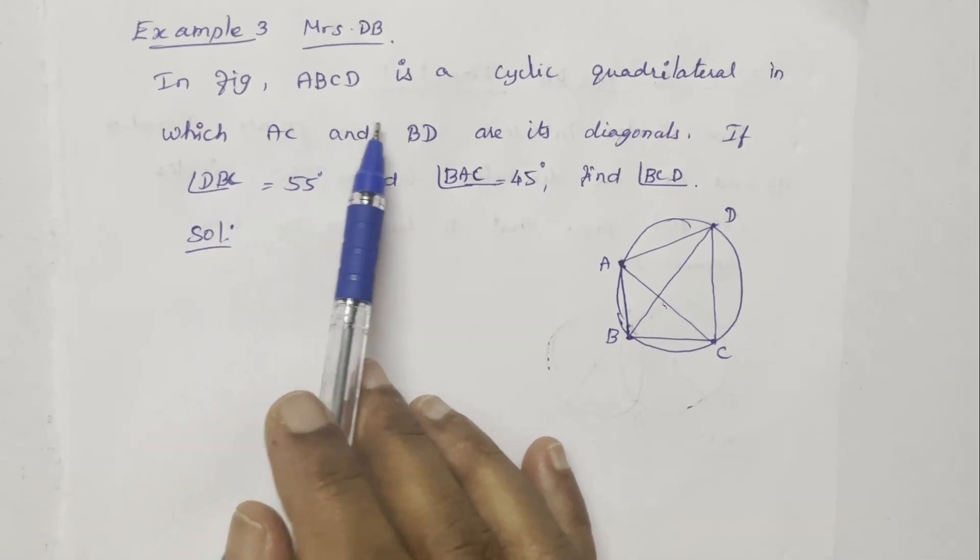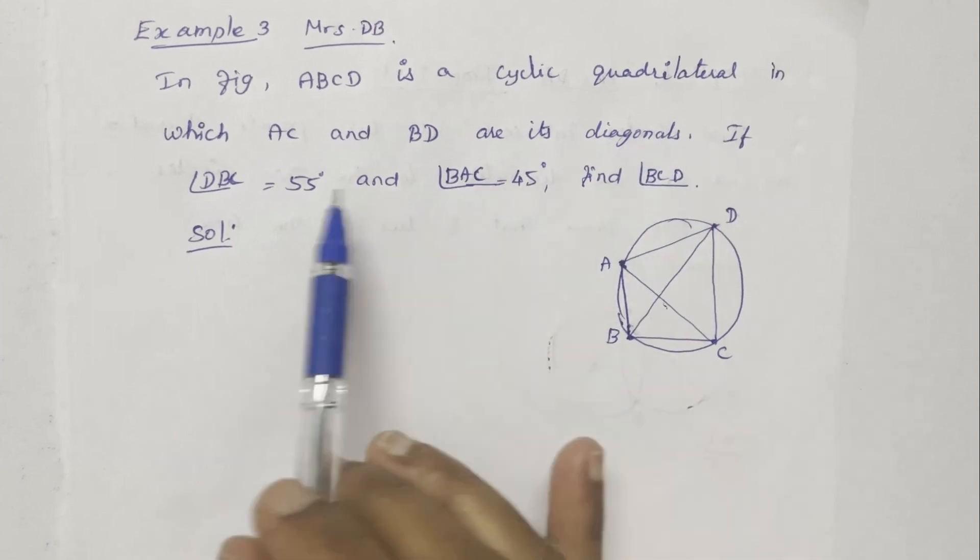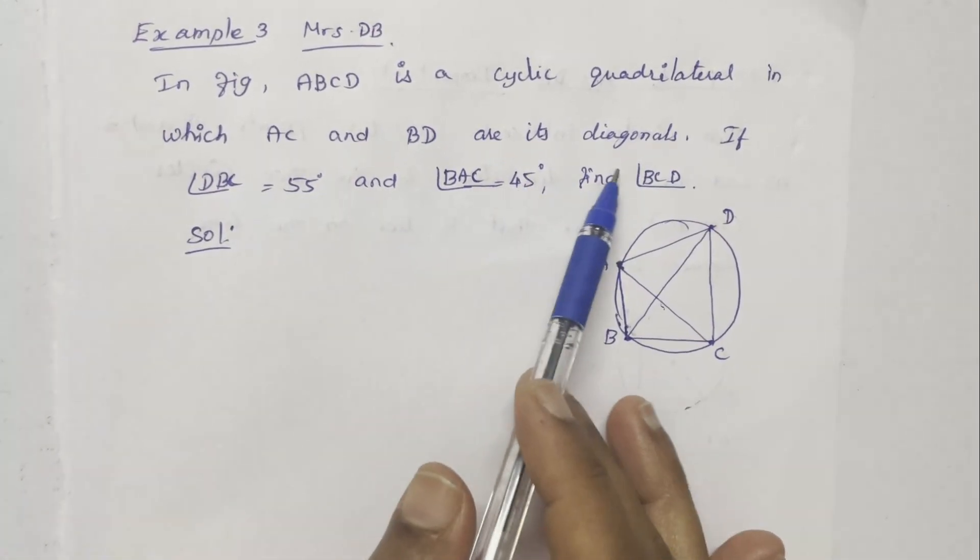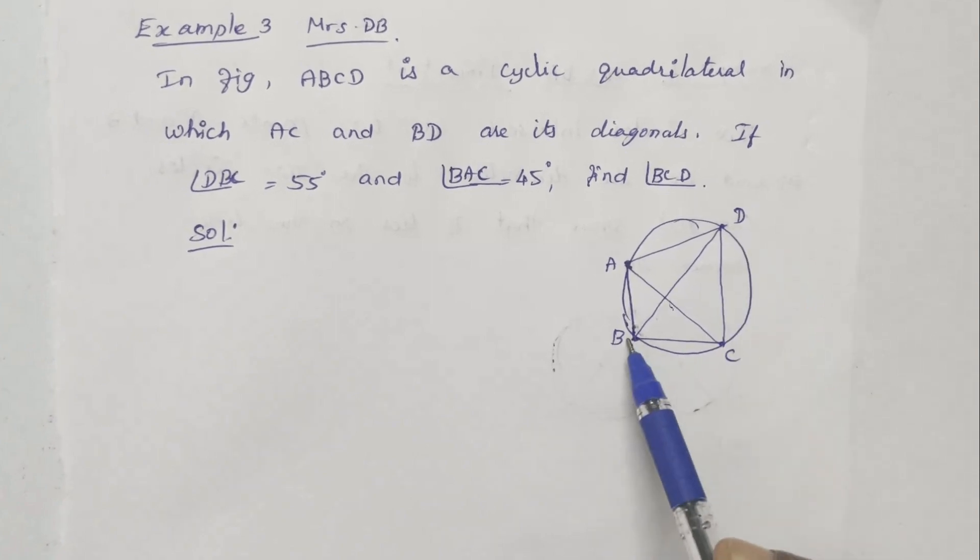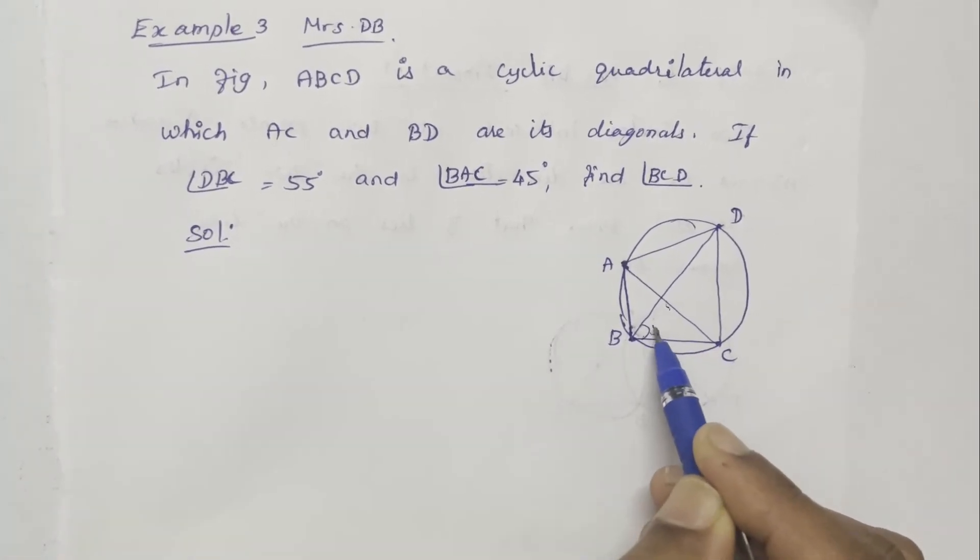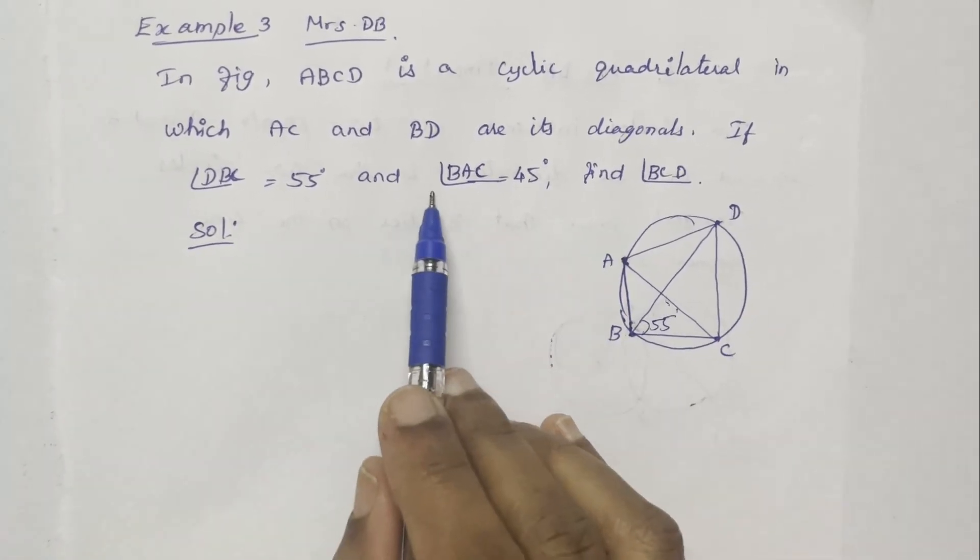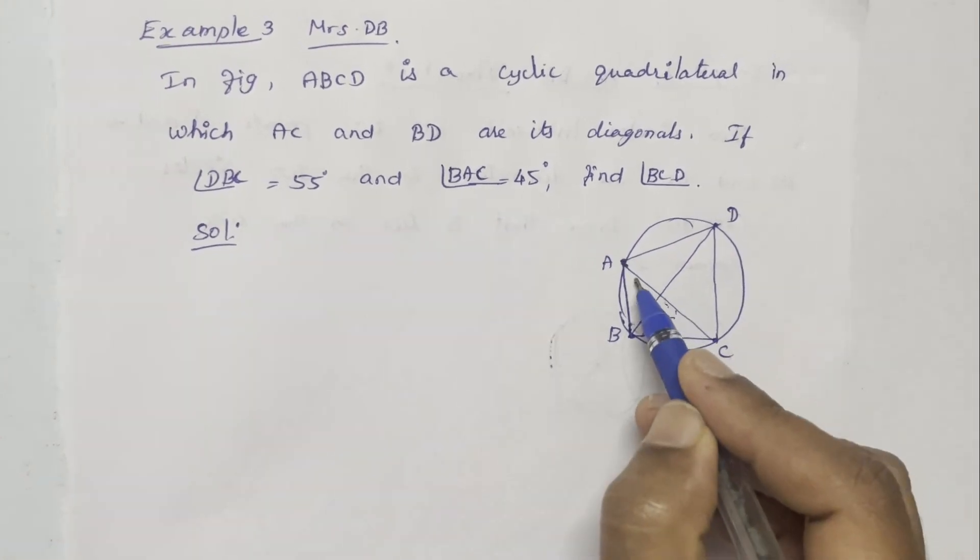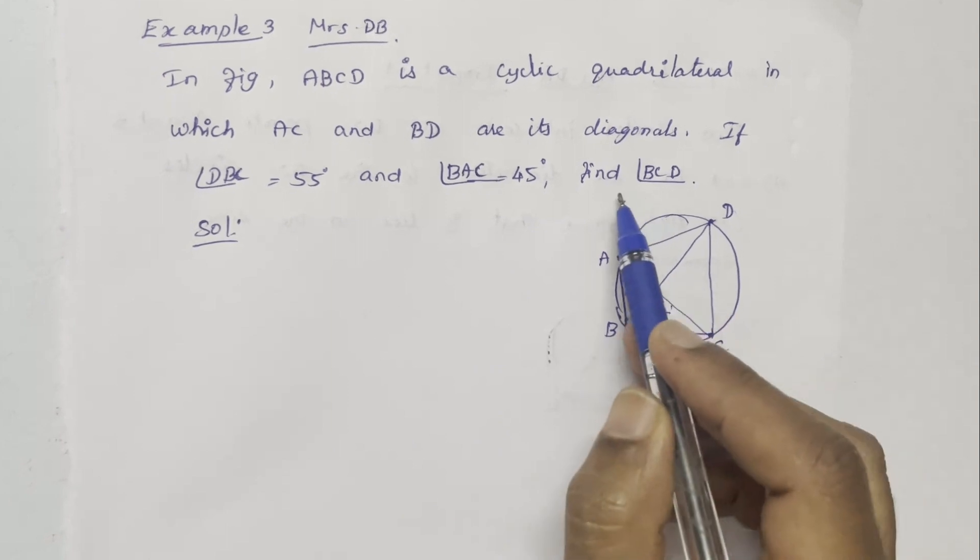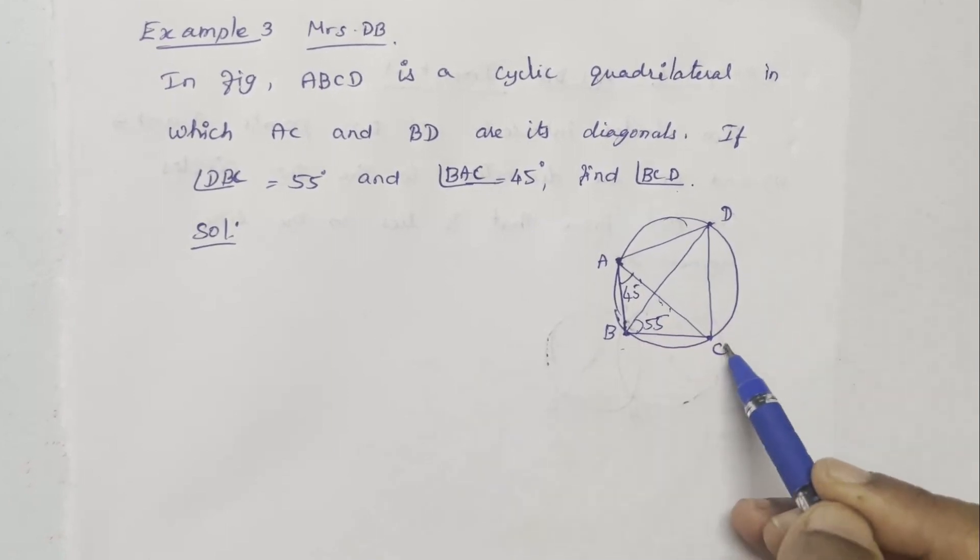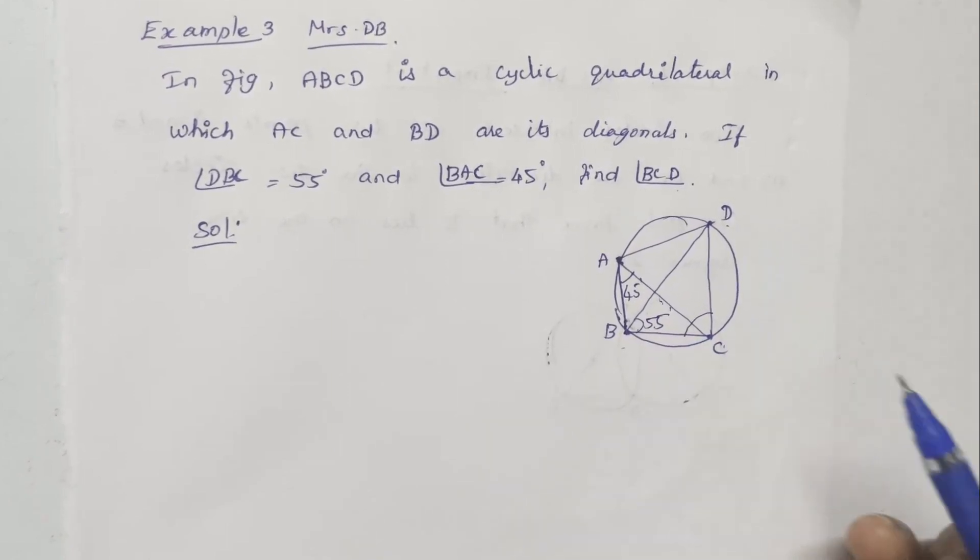In figure, ABCD is a cyclic quadrilateral in which AC and BD are its diagonals. If angle DBC is 55 degrees and angle BAC is 45 degrees, find angle BCD.